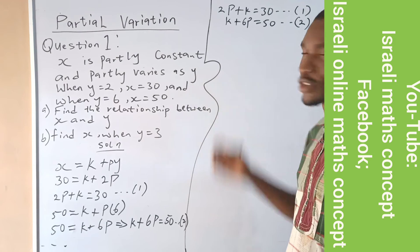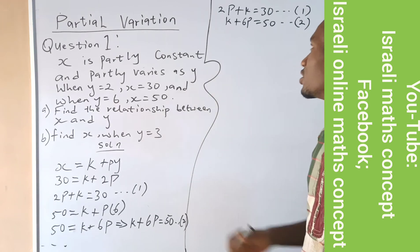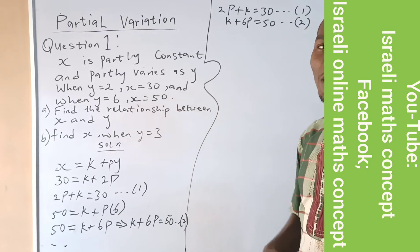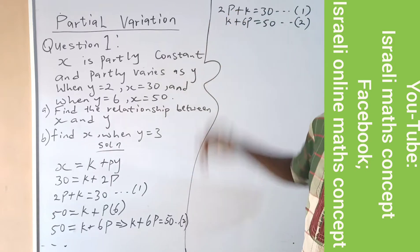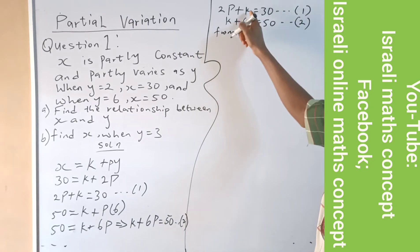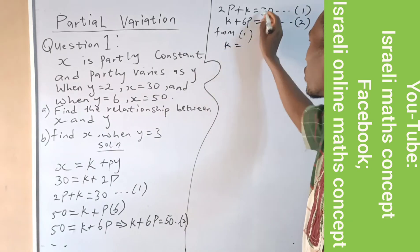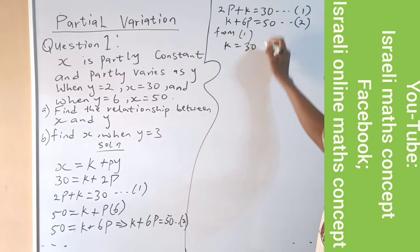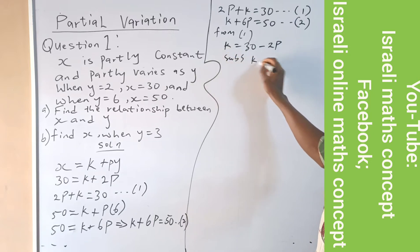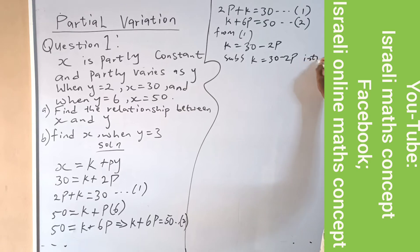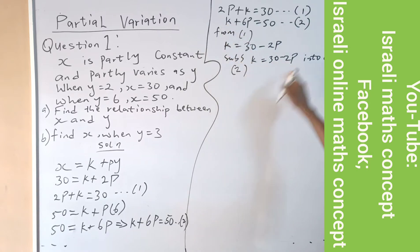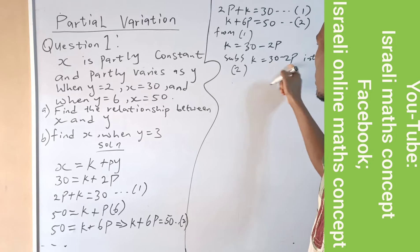There are two ways I could solve this — substitution method or elimination method. Let me use the substitution method. From equation 1, let me make k the subject of the formula. So k equals 30 minus 2p. I will now substitute k equals 30 minus 2p into equation 2. Wherever I see k in equation 2, I replace it with 30 minus 2p.